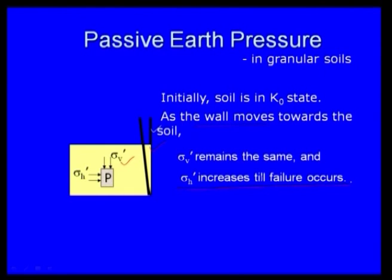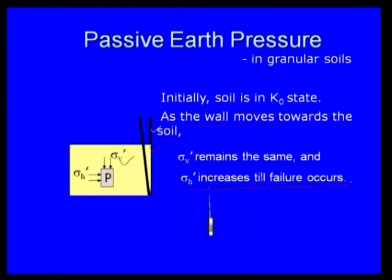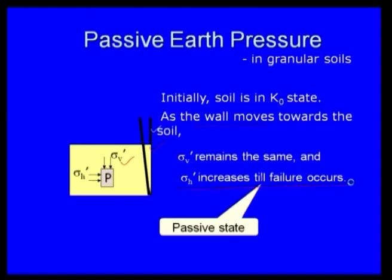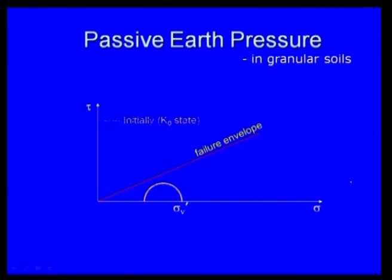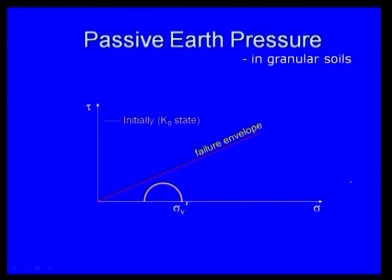In the passive state, sigma-H increases until failure occurs. Looking at the Mohr circle diagram, initially the system is in K0 (earth pressure at rest) condition with sigma-v prime and sigma-H prime. As the wall moves towards the soil, the Mohr-Coulomb circle changes.